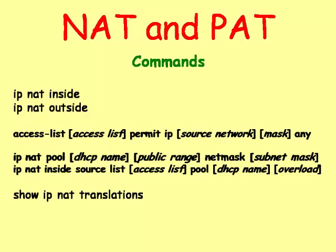The IP NAT inside and outside command are used to define physical interfaces as being part of the inside or outside NAT area. The access list command is used to define the networks that will be the client of the NAT configured router. The IP NAT pool command defines the range of public IP addresses that will be available to the NAT client.